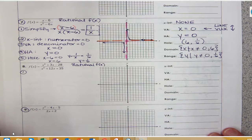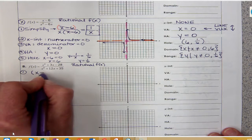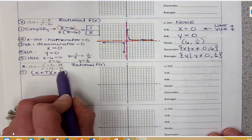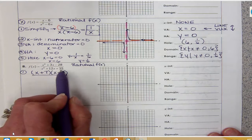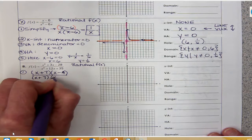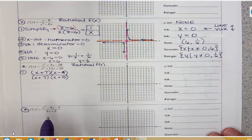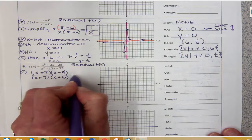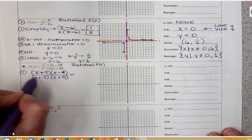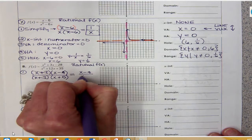So to factor x squared plus 3x minus 28, you're going to get the two numbers that multiply to give you negative 28 and add to give you positive 3, which are going to be (x plus 7)(x minus 4). For the denominator, the two numbers that multiply to give 35 and add to give 12 are going to be (x plus 7)(x plus 5).